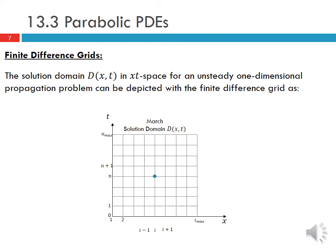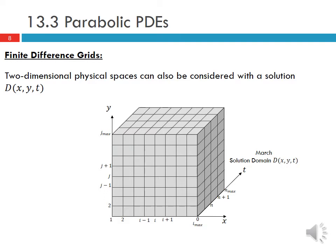The solution domain D of X and T in XT space for an unsteady one-dimensional propagation problem can be depicted with the finite difference grid as shown here. We start with an initial condition and propagate that forward in time, moving to the next time step and continuing on along this open time domain. Two-dimensional physical spaces can also be considered with a solution domain D of X, Y, and T, where we start with an initial condition in XY space and march that forward in time.